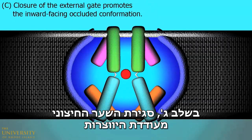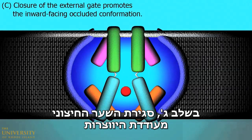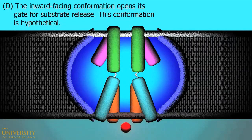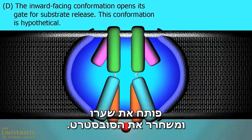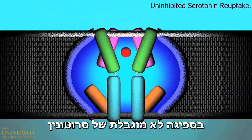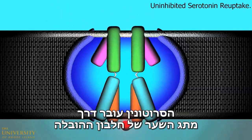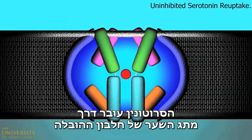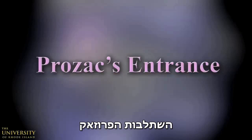In stage C, closure of the external gate promotes the inward-facing occluded confirmation, and in stage D, the inward-facing confirmation opens its gate for substrate release. This confirmation is hypothetical. During uninhibited serotonin reuptake, serotonin moves through the transport protein's gated rocker switches smoothly.